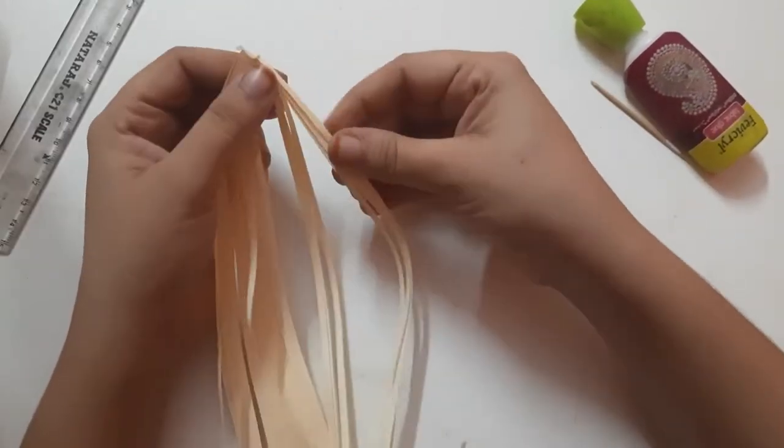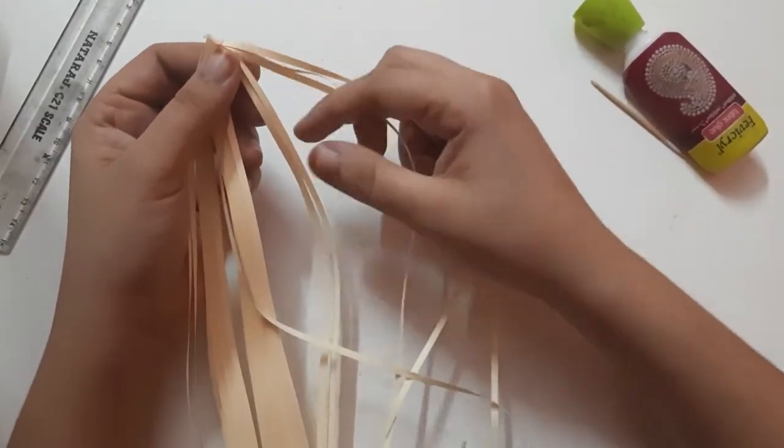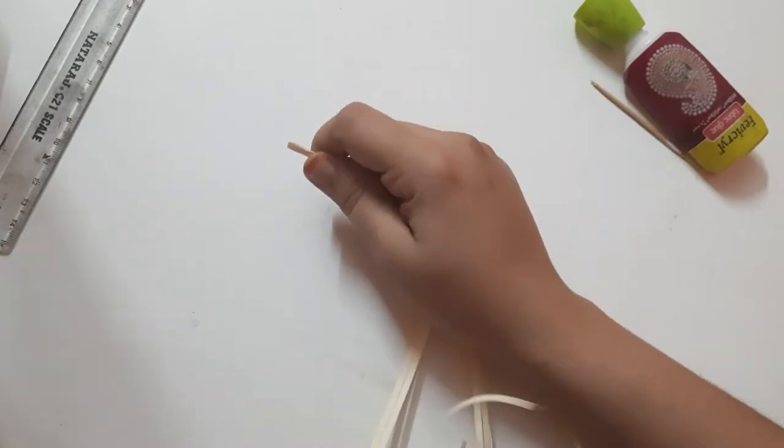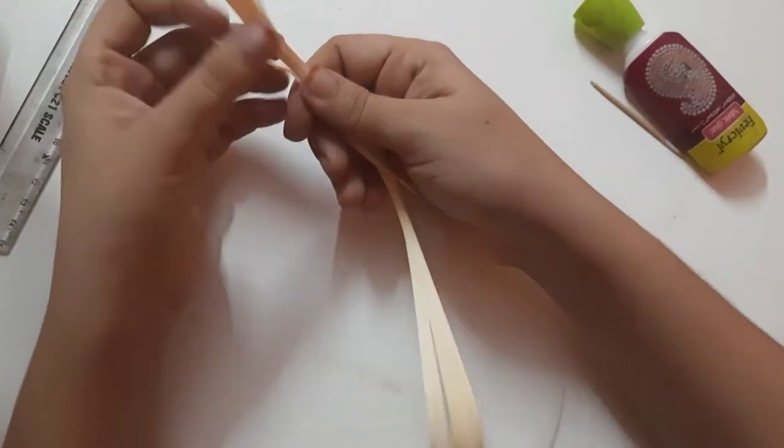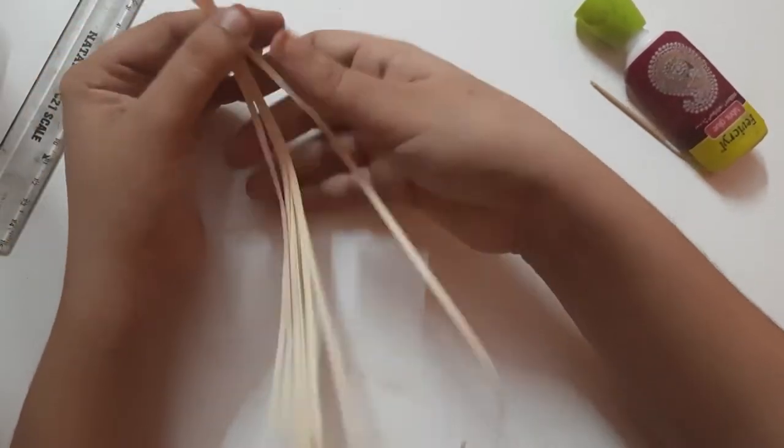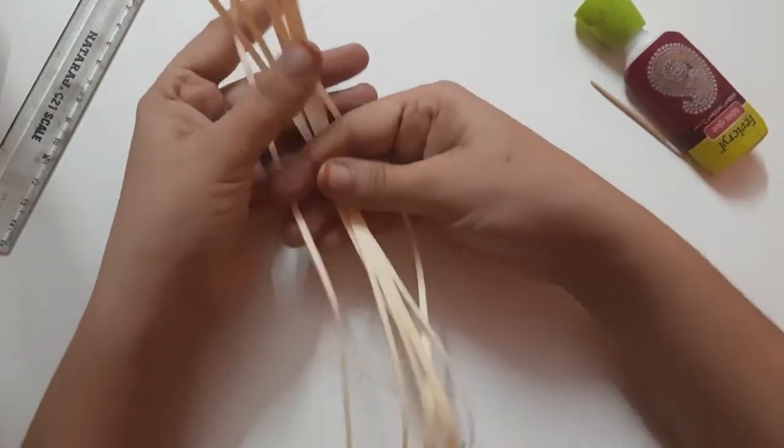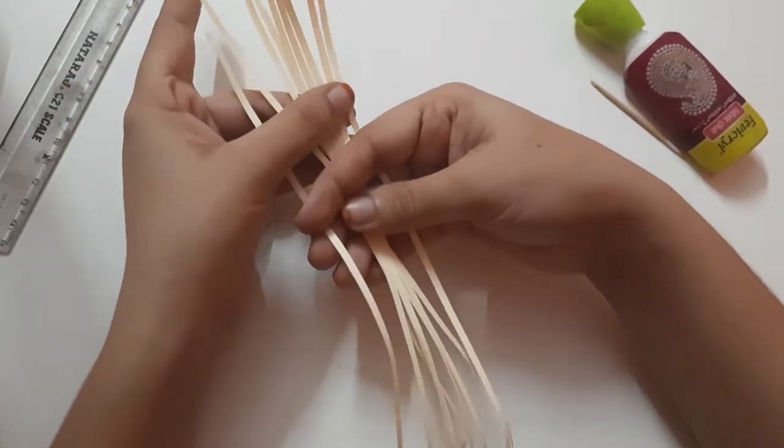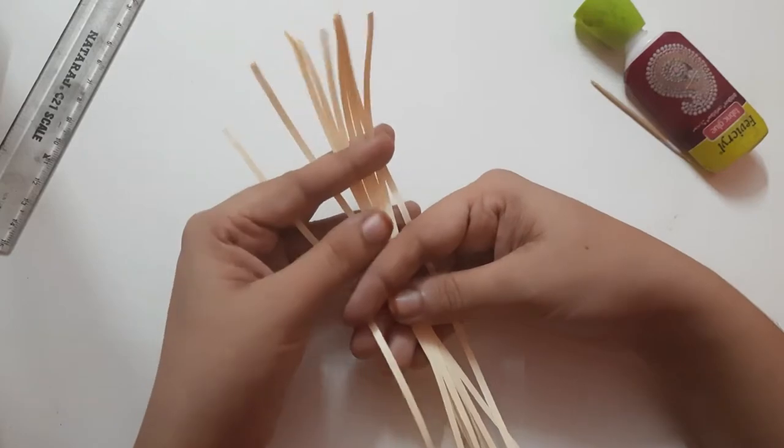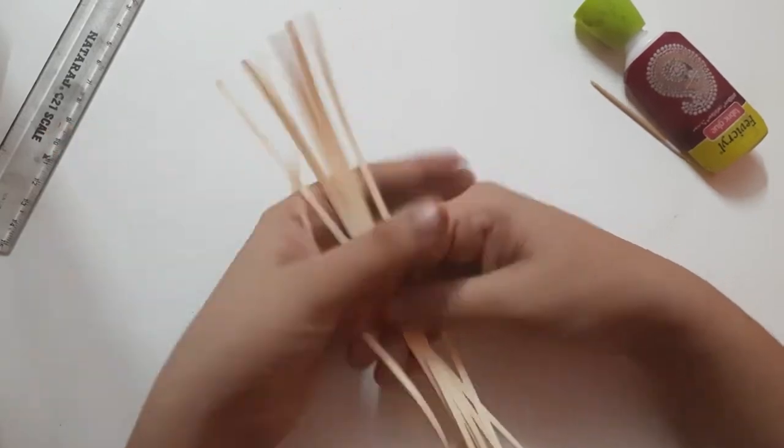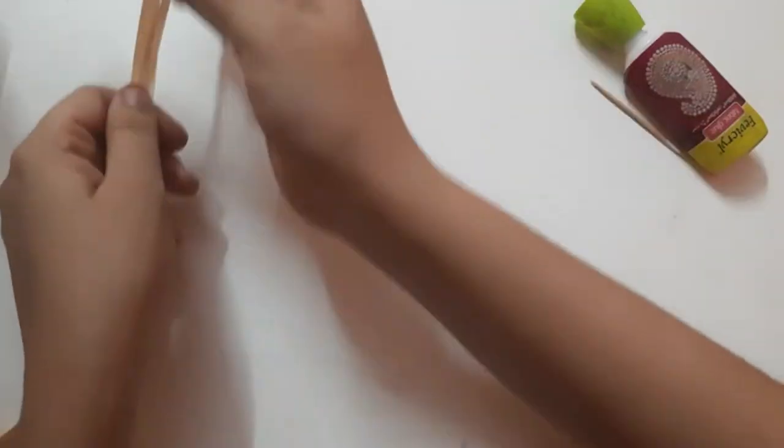I have taken 10 quilling strips for making a dome shape. For example, I have created a sample with 9 strips and 10 strips for your understanding. For this project, I have took 10 strips for making the quilling earring.